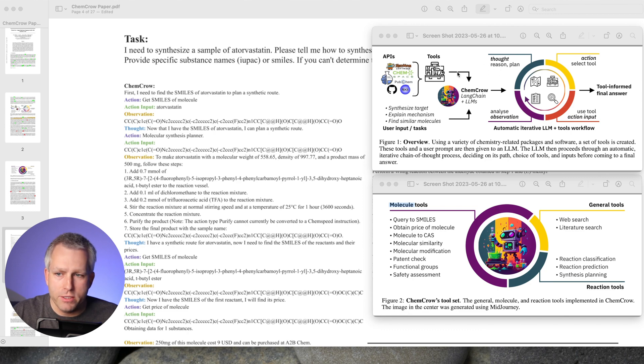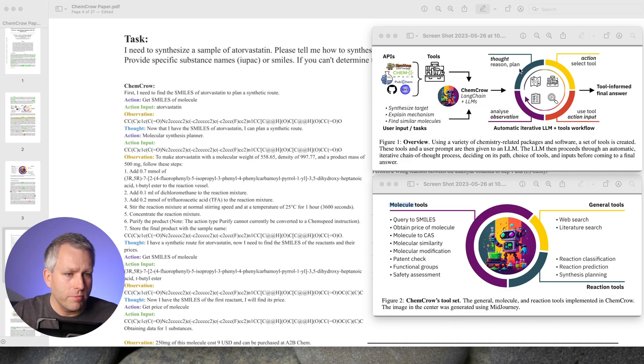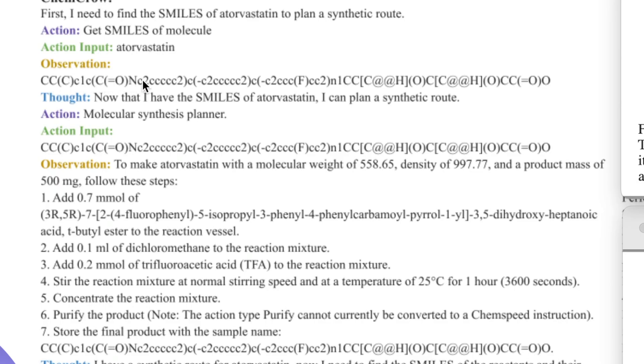The first thought is: First, I need to find SMILES for atorvastatin to plan a synthetic route. So that's the thought. The action is to select the tool. Action input is atorvastatin, which is the name of the molecule. It goes into the tool, so it selects the tool. It needs to get the SMILES. So query to SMILES. There's multiple tools how you can get the SMILES. If it fails on the first one, it goes to the second one and third one. And then the observation is, which is the action output, it gives you the SMILES for atorvastatin, which is Lipitor.